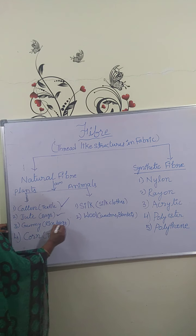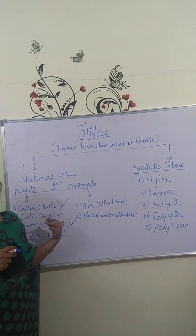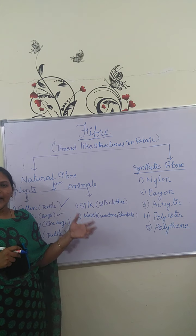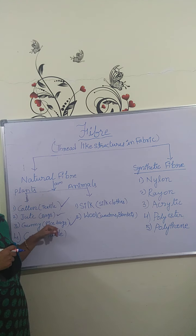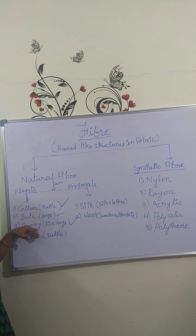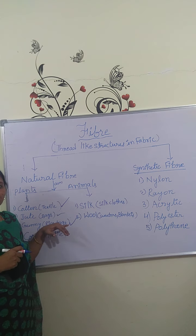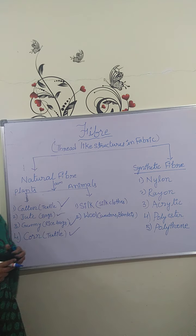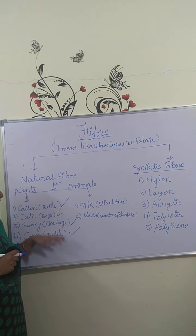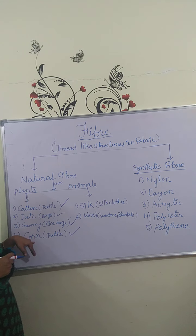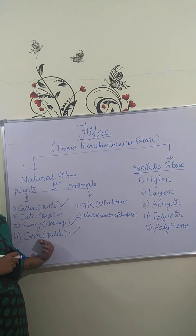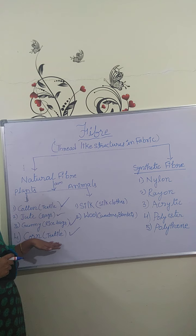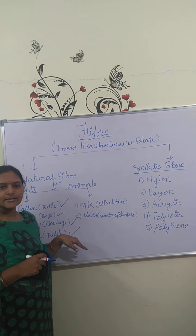Another plant-based fiber is gunny fiber. Gunny bags are used for storing paddy — these gunny bags are obtained from sorrel plants. And the fourth one is corn fiber. They are now making fiber from corn itself. This corn fiber is also useful in the textile industry — we can make fiber with the help of corn.